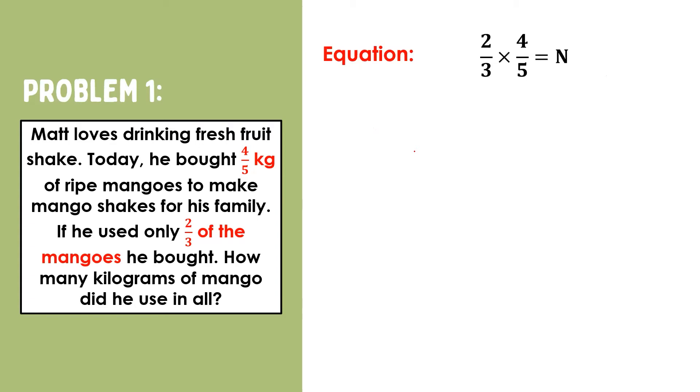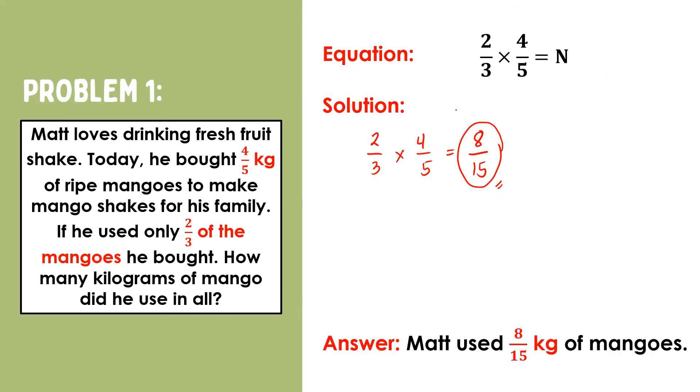Recall that in multiplying fractions, we multiply the numerators and the denominators. So, we'll have two times four is eight, and three times five is fifteen. Eight-fifteenths is a proper fraction, so regrouping is not necessary. Also, eight-fifteenths is already in its simplest form. Therefore, Matt used eight-fifteenths kilogram of mangoes.